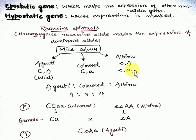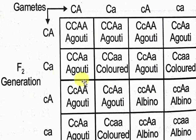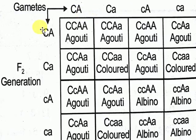The parents produce gametes: colored parent gives Ca, and albino parent gives cA — no other choice. In F1 we get CcAa, which is agouti. When we self this F1 agouti to form F2, the possible gametes are: CA, Ca, cA, and ca — four types. Both sides of the Punnett square will have the same four gametes since it is selfing.